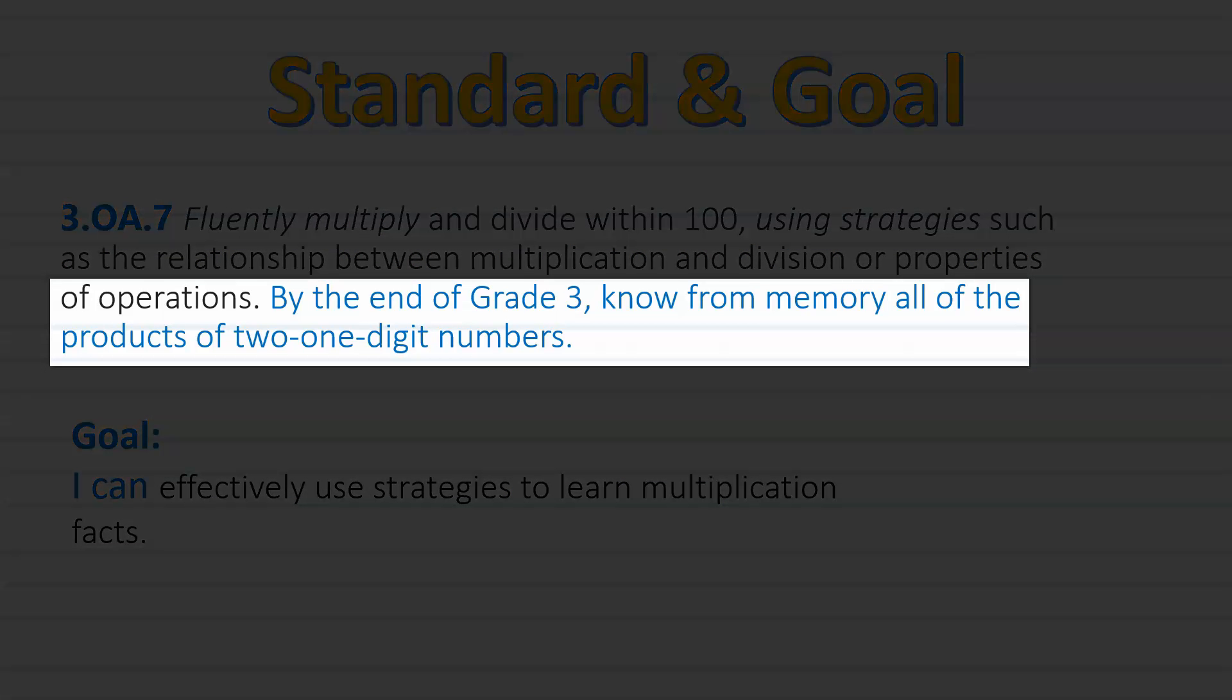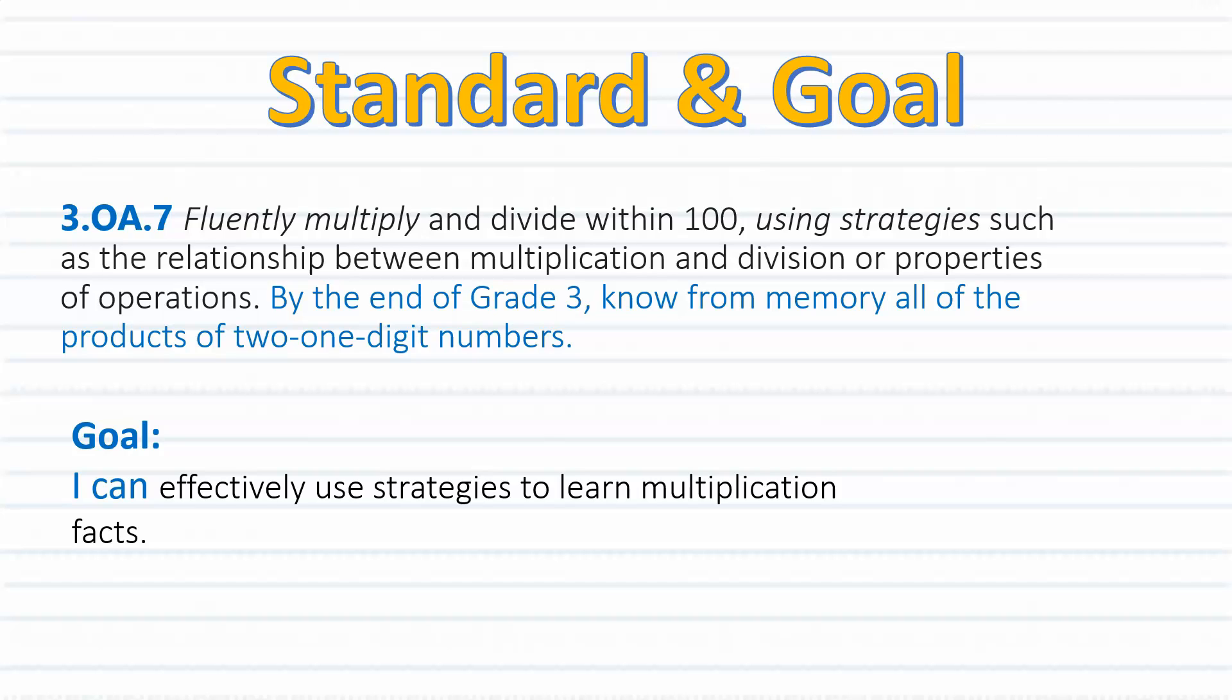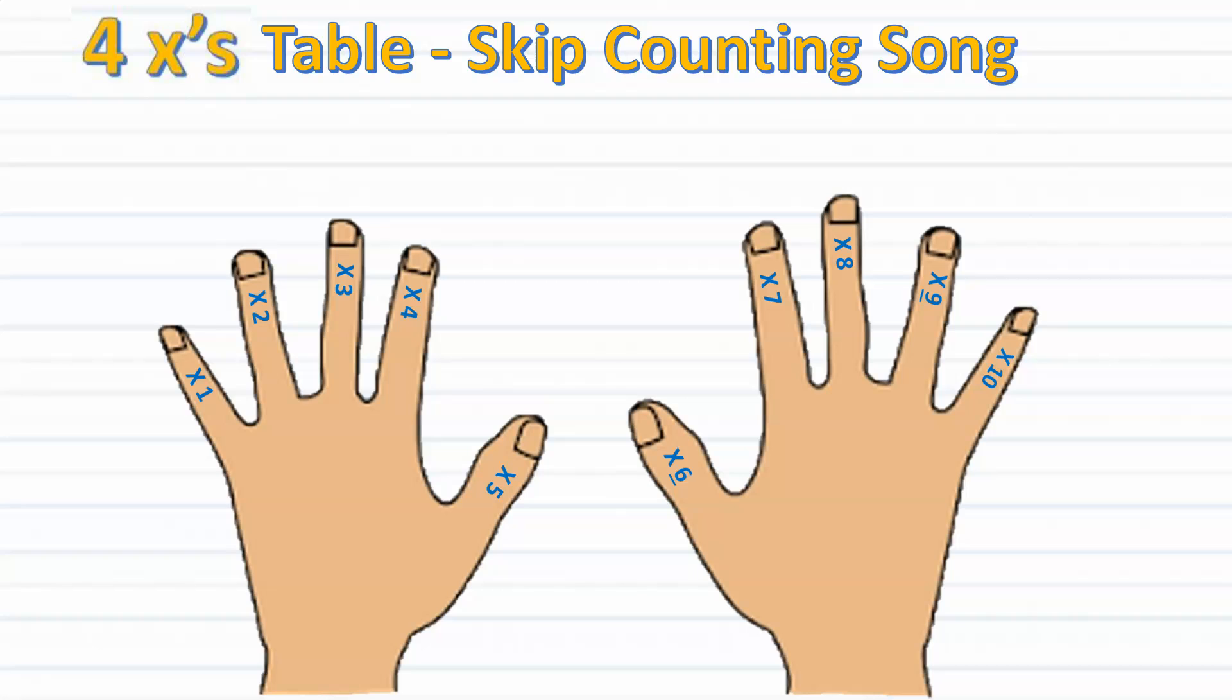Remember that by the end of third grade, you are expected to know all of your multiplication facts one through nine. Today, we will focus on skip counting as one of many strategies to practice our four times table. With this strategy, we will be using our fingers to guide us along in finding the product of two factors.